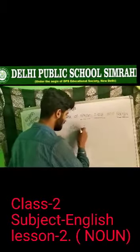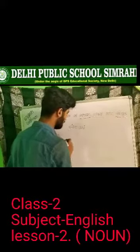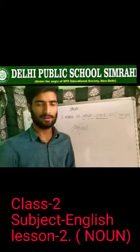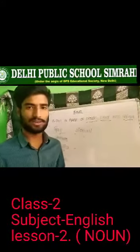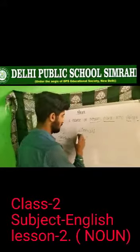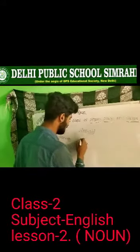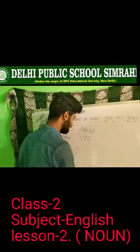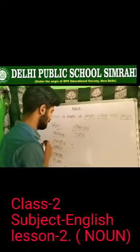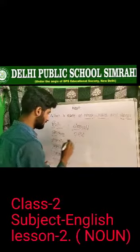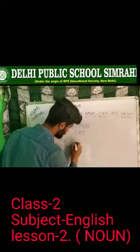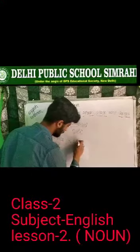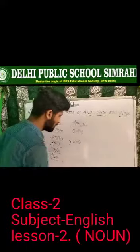Simurai — Simurai is the name of the place where we live, where our school is situated. The name of that place is Simurai. Dilli — Dilli is also the name of a place. India — India is the name of our country.